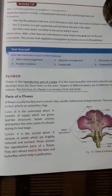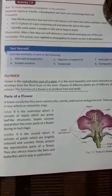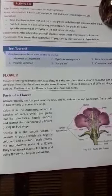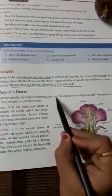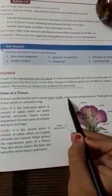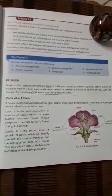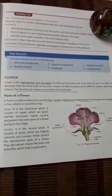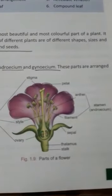Now coming to the parts of a flower. A flower usually has four parts or whorls, which are as follows: calyx, corolla, androecium, and gynoecium. These four parts are arranged in four whorls or concentric rings.